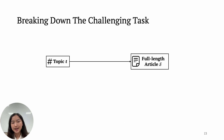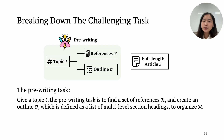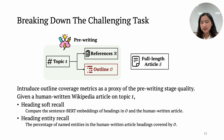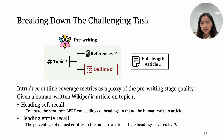While the system input is only the topic T and the desired output is the full article with citations, we break down the task into two stages. Specifically, we introduce the pre-writing stage: given the topic T, the task is to find a set of references and create an outline defined as a list of multi-level section headings to organize the gathered information. For fast prototyping, we introduce outline coverage metrics as a proxy of pre-writing stage quality. We compute heading soft recall using cosine similarity derived from sentence BERT embeddings. Another metric is heading entity recall, defined as the percentage of named entities in the human-written article's headings covered by the generated outline.